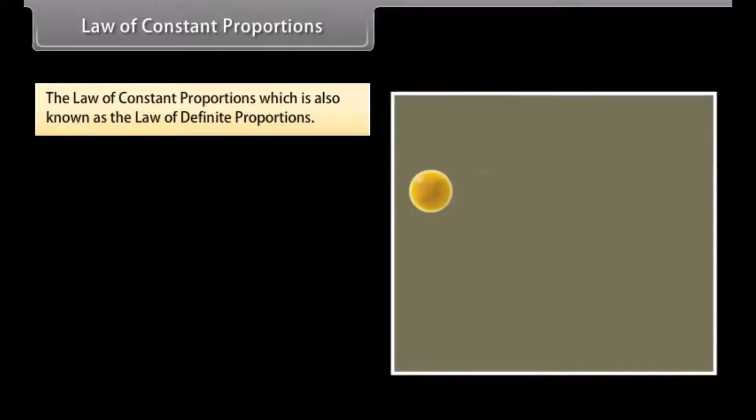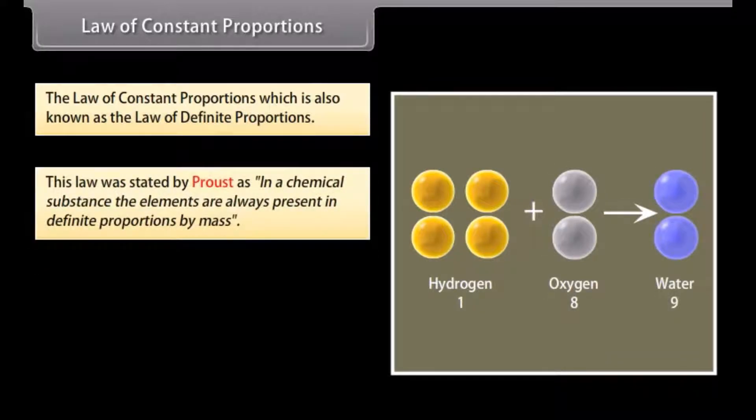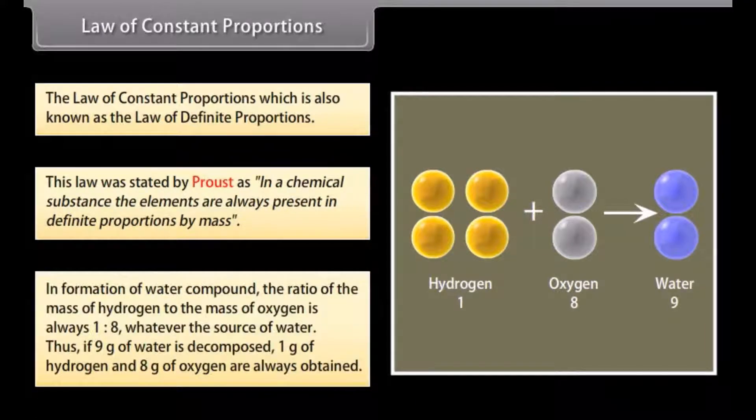Law of constant proportions, which is also known as the law of definite proportions, was stated by Proust. In a chemical substance, the elements are always present in definite proportions by mass. In formation of water compound, the ratio of the mass of hydrogen to the mass of oxygen is always 1 is to 8, whatever the source of water. Thus, if 9 grams of water is decomposed, 1 gram of hydrogen and 8 grams of oxygen are always obtained.